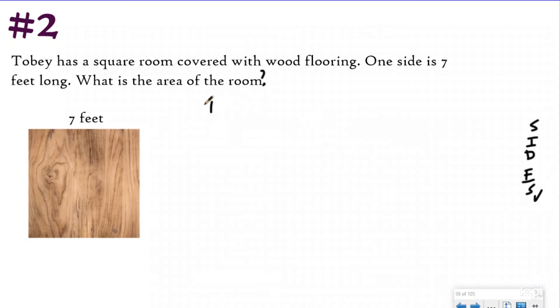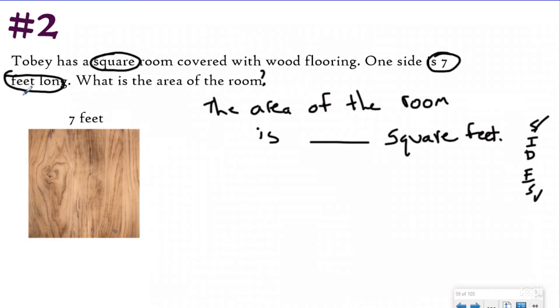So my statement is going to say the area of the room is blank square feet. When I go back and identify now, I'm identifying that this is a square and one of the sides is seven feet long. So at first, maybe you're confused because wait a minute, to do my area formula, I need to have two dimensions. I need to have length and width.